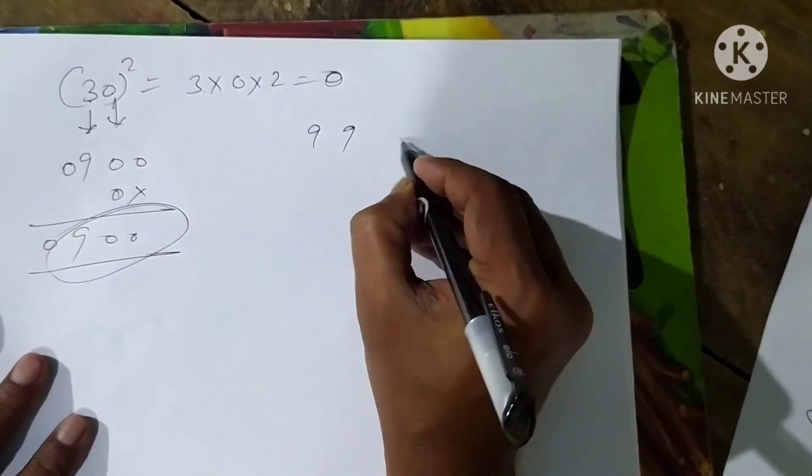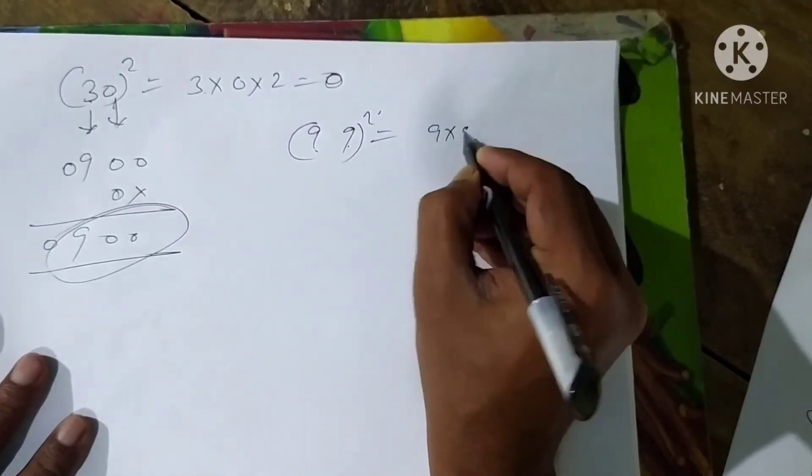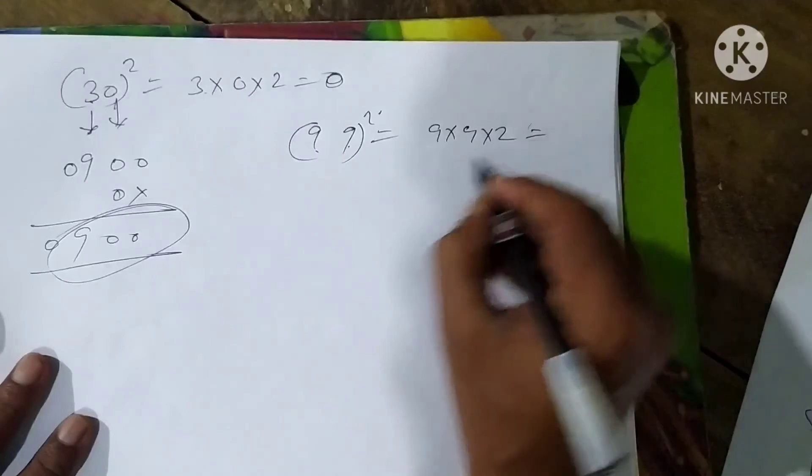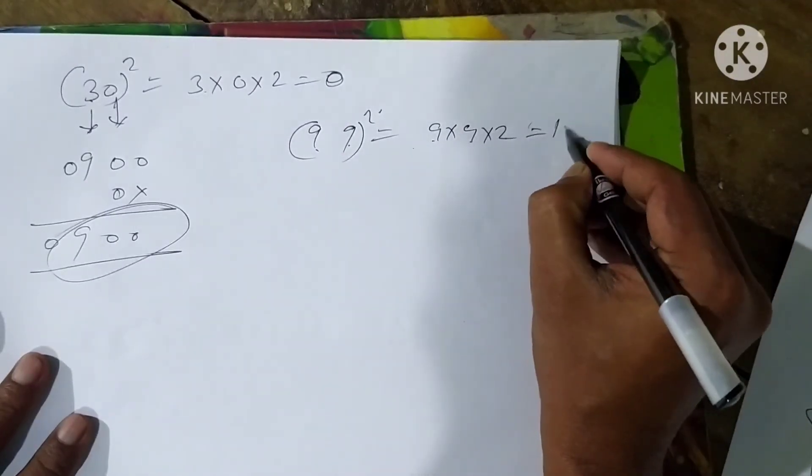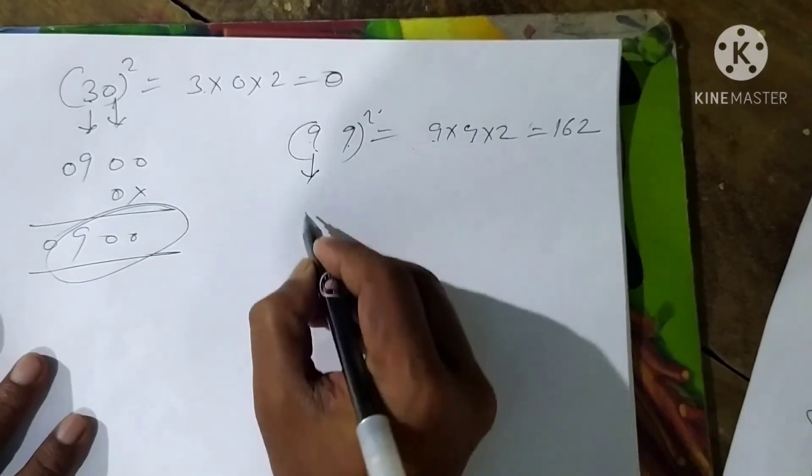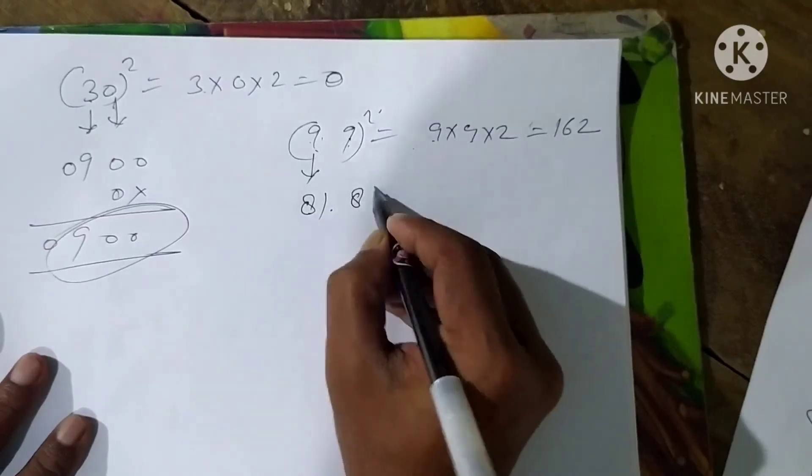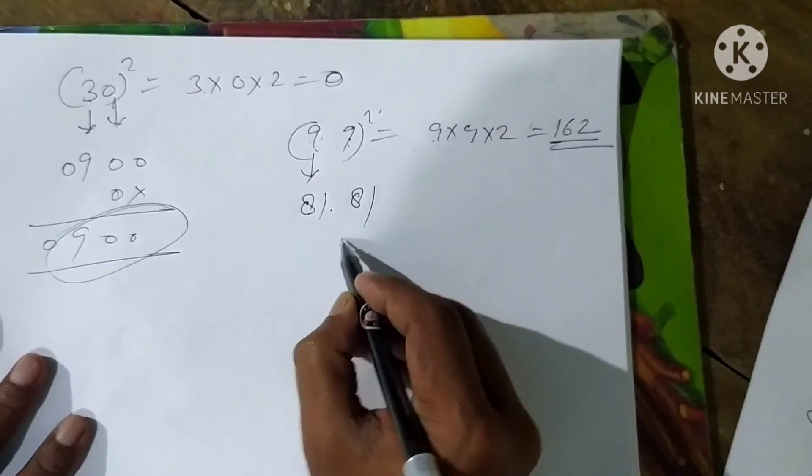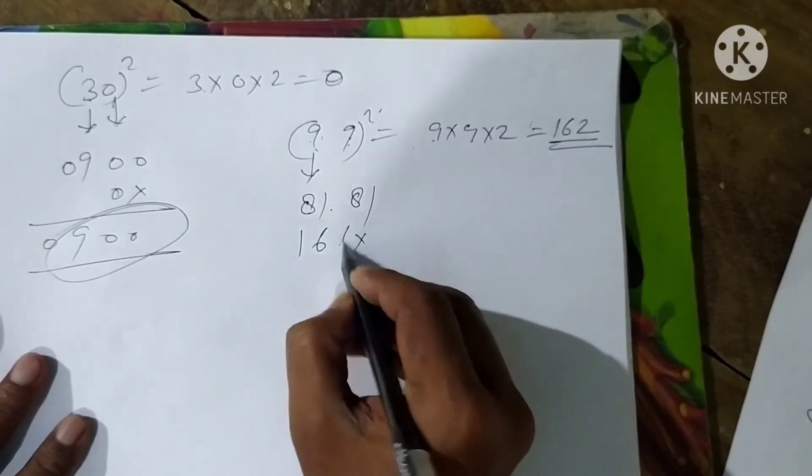So, we need to find the 99 square. 9 into 9 into 2, that is how much? 9 and 9 are 162, right? This square is 81. There are 2 digits. 9 square is 81.